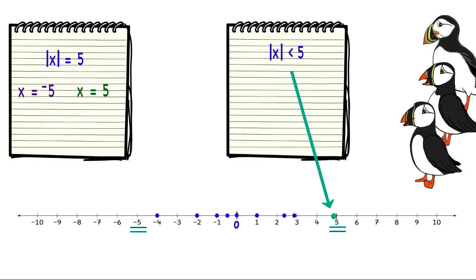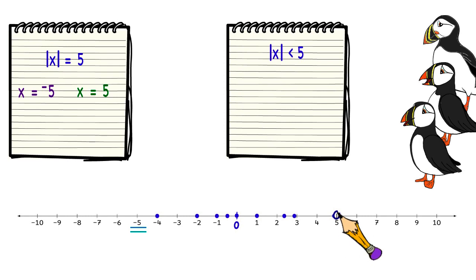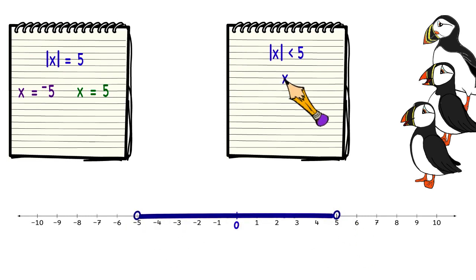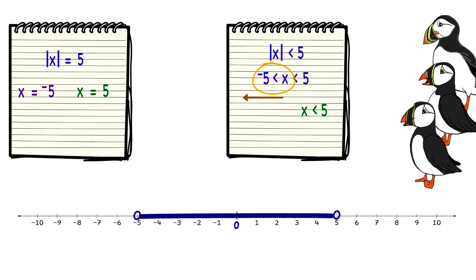To graph all the possible solutions, we need to put an open circle around 5 and negative 5 and shade in between them. We can describe these numbers as less than 5 but also greater than negative 5. Just like when we solved absolute value equations, we need to write the inequality twice — once with the inequality being positive and once with it being negative. So the absolute value of x less than 5 becomes: x is less than 5 and x is greater than negative 5.